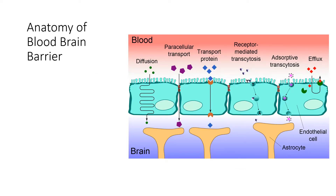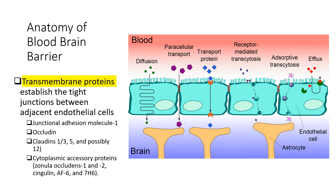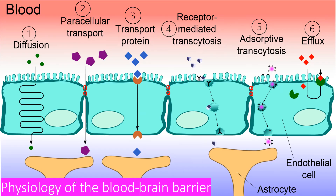Continuing with the molecular anatomy of the blood-brain barrier: the transmembrane proteins responsible for establishing tight junctions between endothelial cells include occludins and claudins as the main proteins, junctional adhesion molecule-1 (JAM-1), and cytoplasmic accessory proteins — zonula occludens (ZO) and cingulin — which are required for the formation of tight junctions.